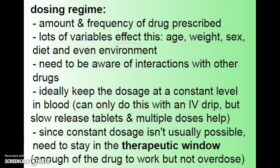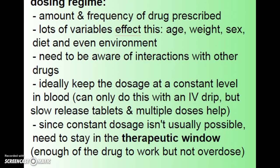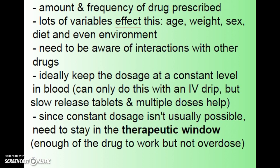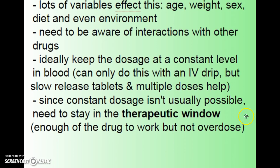The dosing regime is the amount and frequency of a drug prescribed, and it depends on age, weight, sex, diet, and even environment. You also need to be aware of interactions with other drugs — this is where pharmacists come in. Ideally, you'd keep dosage at a constant level in the blood, which is only truly achievable with an IV drip. Slow-release tablets and multiple small doses throughout the day help maintain levels. The goal is to stay within what's called the therapeutic window, keeping drug levels in the blood consistent rather than spiking and dropping.